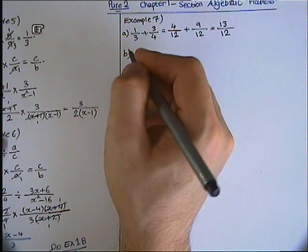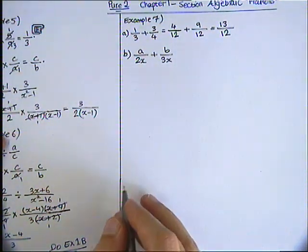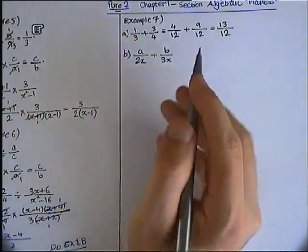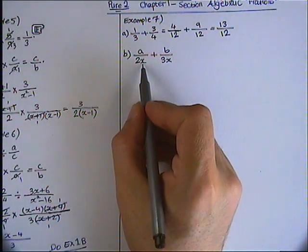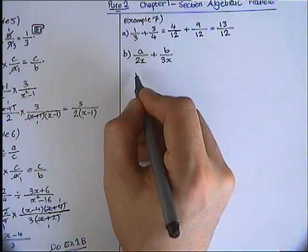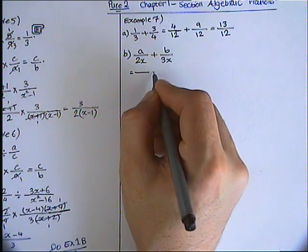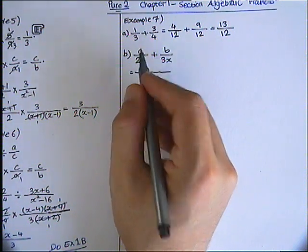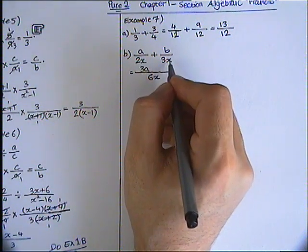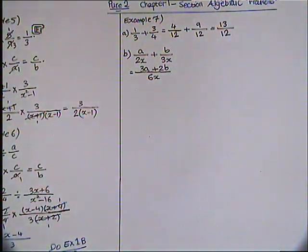Part B: a over 2x plus b over 3x. Like the previous question, we need a common denominator. You might think at first that 2x and 3x is 6x squared, but it's not the case because we've got x and x here. Therefore, x is common in both of them. So if x is common in both of them, what we need to do is just choose x from both. However, I write it as a single fraction. 2 times 3 is 6x. I multiply 2x by 3, therefore 3a. And then I multiply 3x by 2, which is 2b. 3a plus 2b are not like terms. We cannot add them up, so leave as it is.